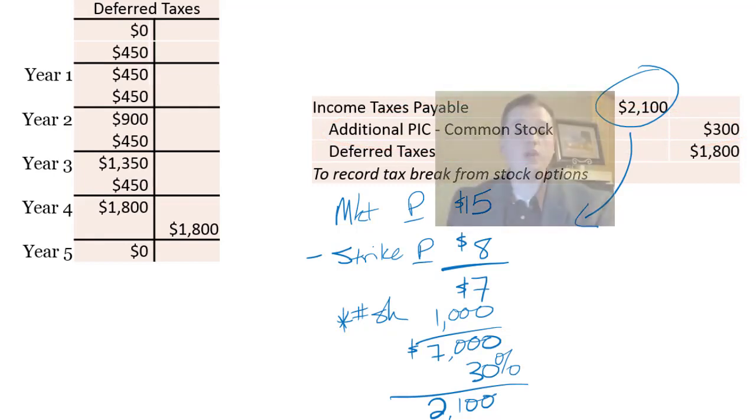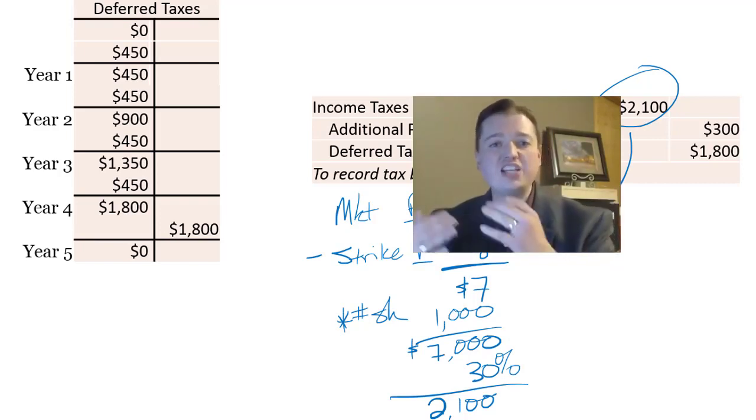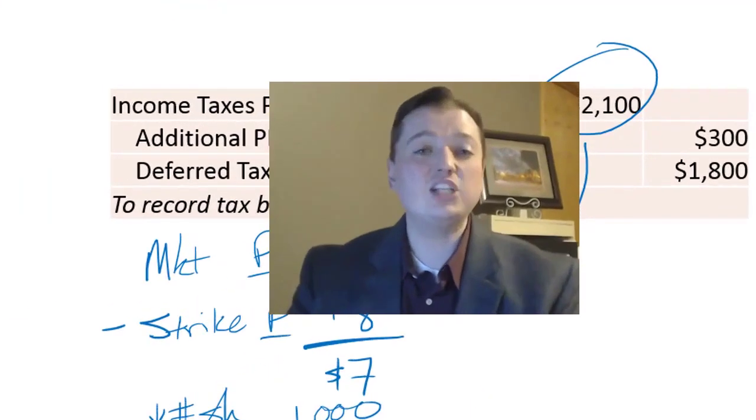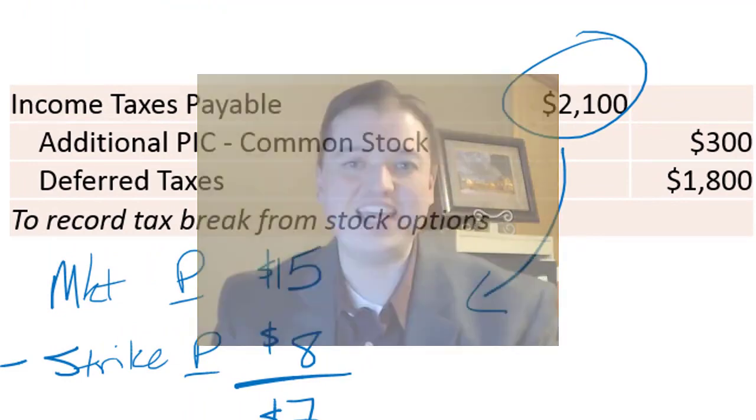That takes care of our discussion of equity options. We've gone through all of the journal entries required. Not only for the actual issuance of the options and the exercise loss and expiration of the options, but we also took some time and looked at the deferred tax effects of the options, which was kind of cool to look at now that we know how that works. But we need to still talk about our liability options. We'll be doing that next. We'll see you then. Thanks.